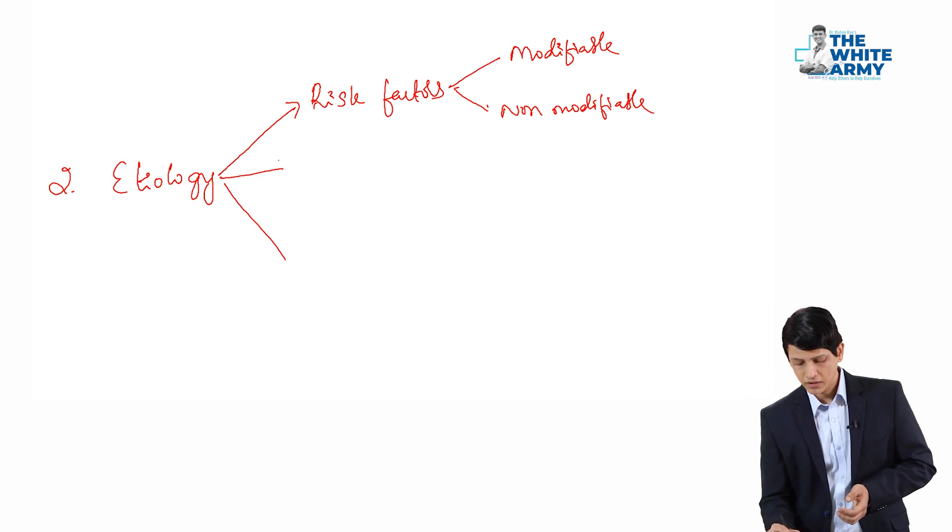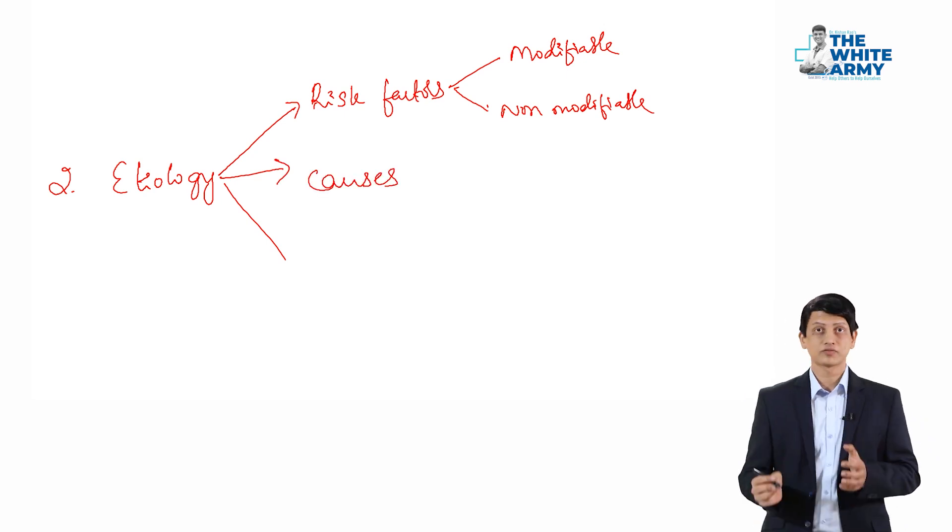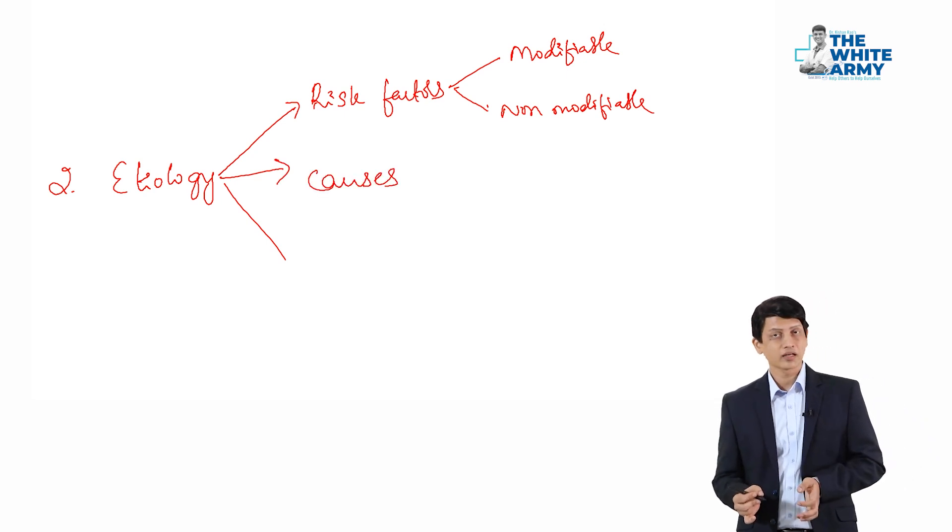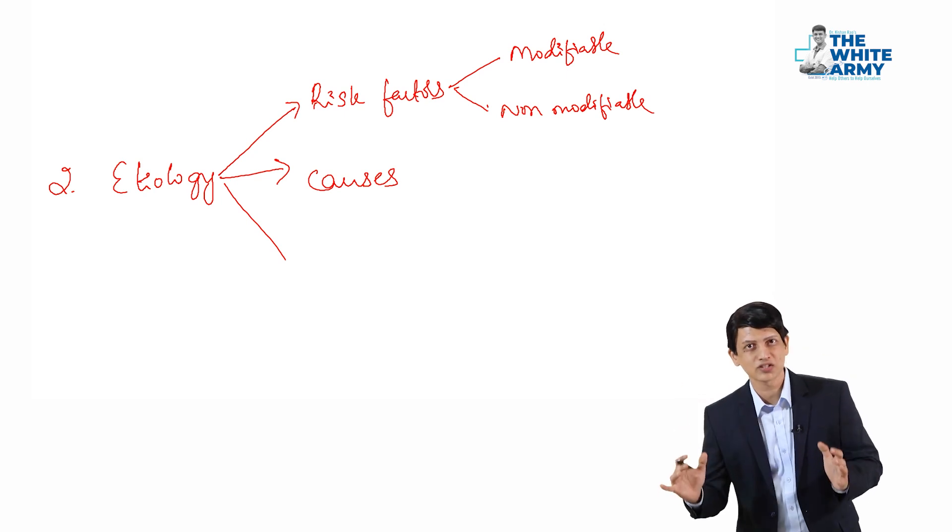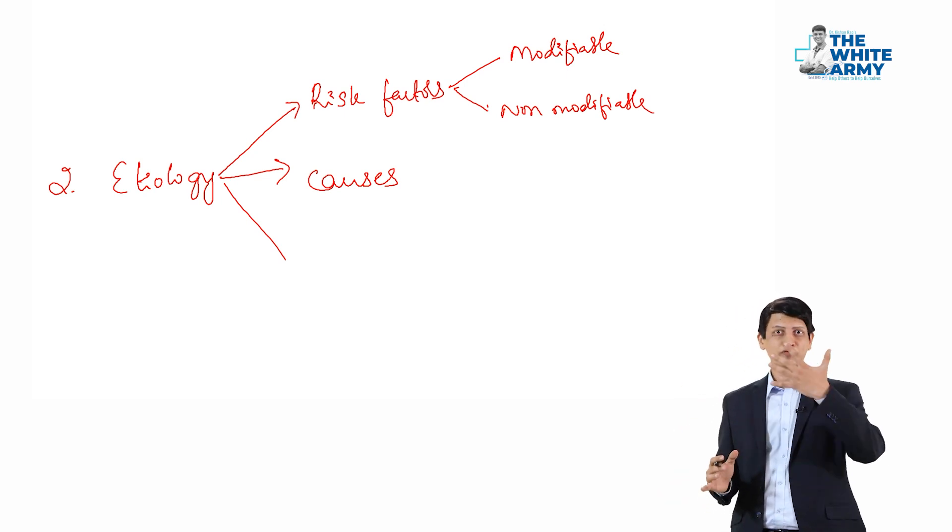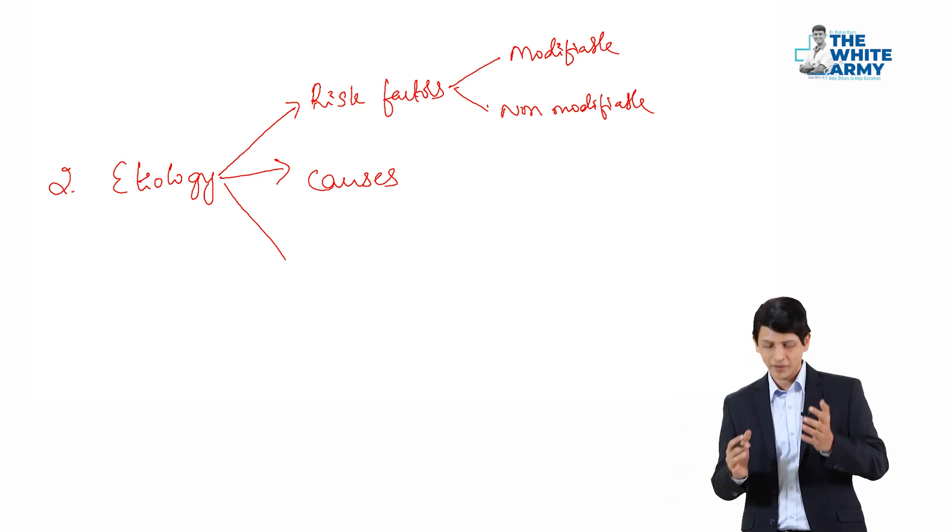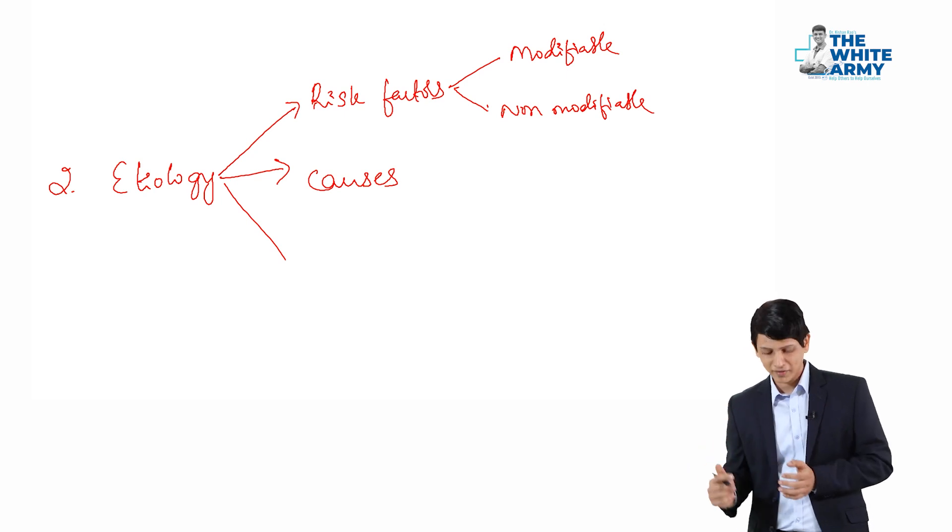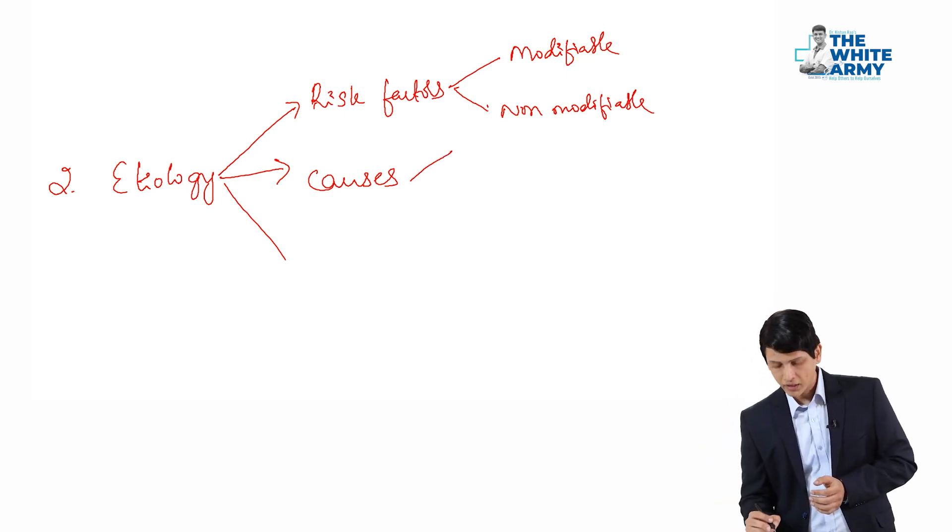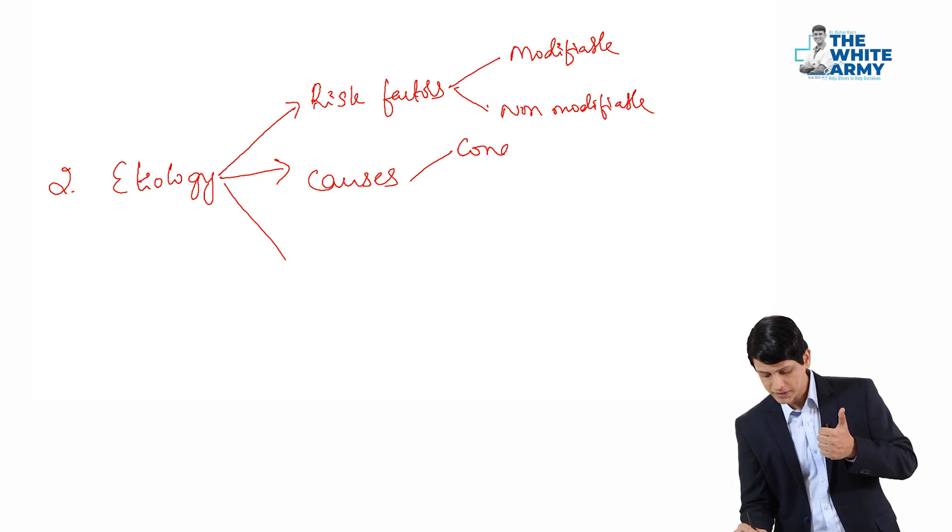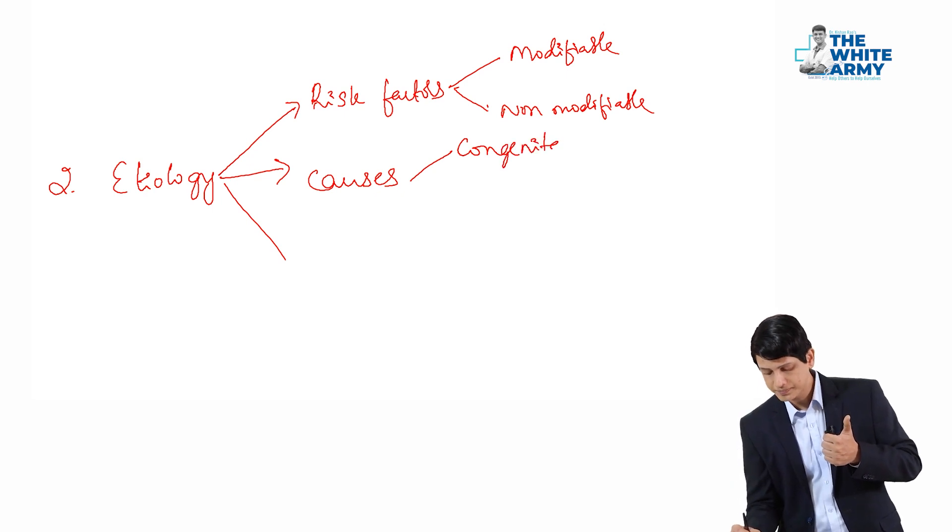Second one is causes. What are the causes for that particular condition? Again, for any given disease or condition, there could be five types of causes. I am making this template very simple for you. Causes can be either congenital, congenital or genetic causes. Second is traumatic.